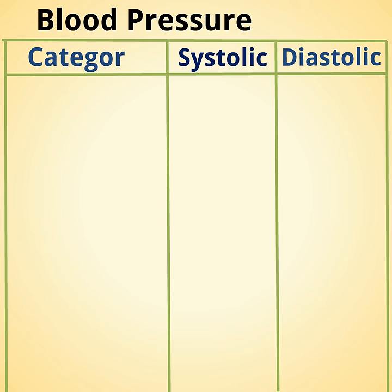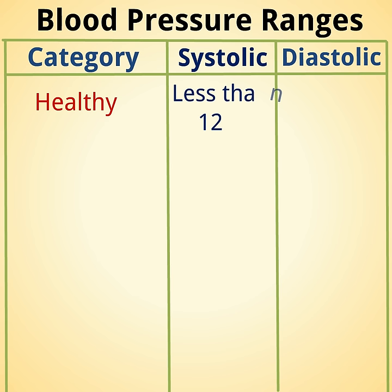We are going to see about the blood pressure range. For a healthy person, the systolic blood pressure is less than 120, and diastolic is less than 80.